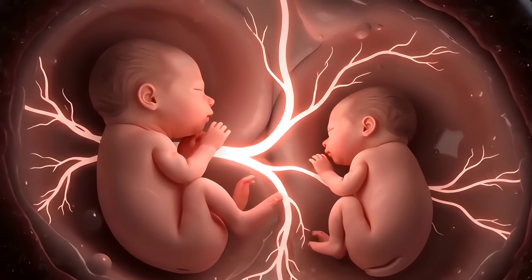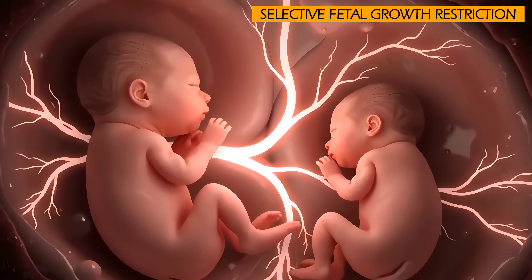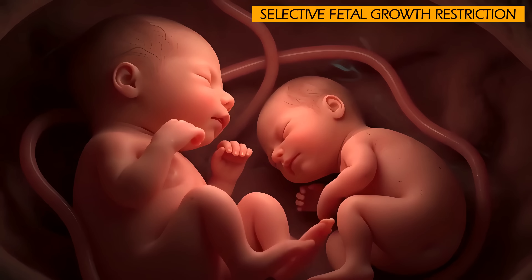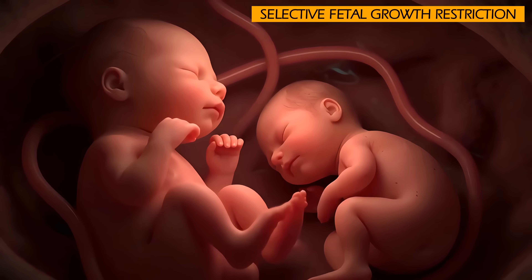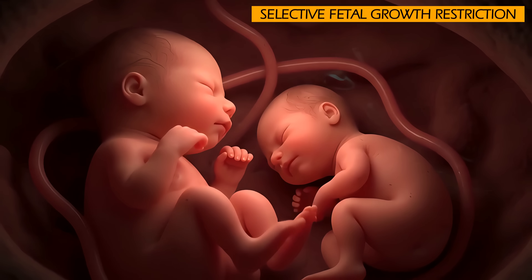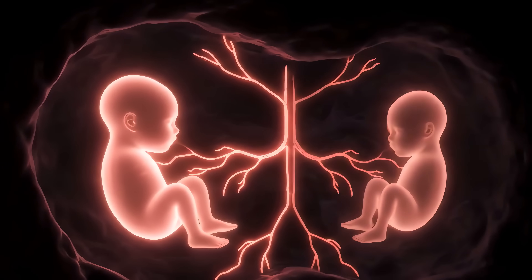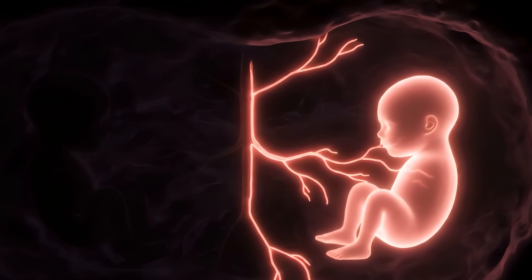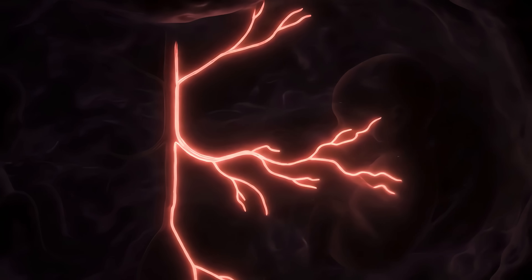Another complication is selective fetal growth restriction. This happens when one twin receives a smaller portion of the placenta and therefore doesn't grow as well as the other twin. If one twin dies in the womb, the shared blood supply can put the surviving twin at significant risk of death or neurological injury.